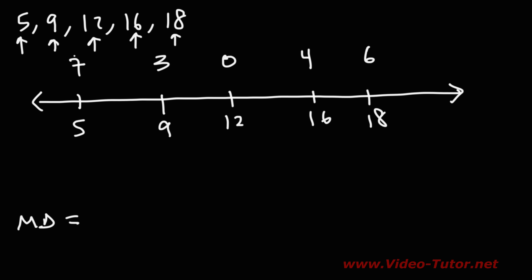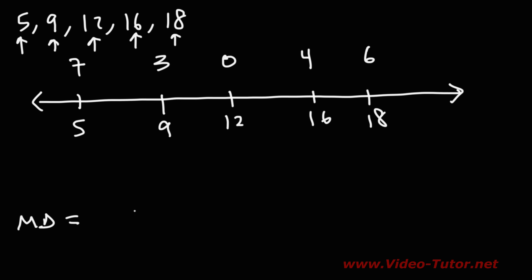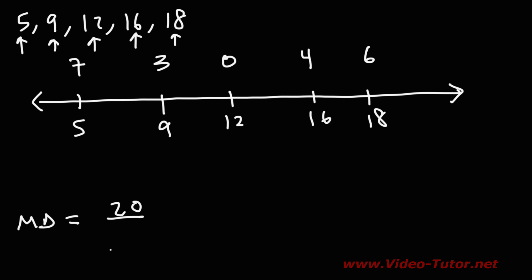We've taken the average of these 5 deviations to get the mean absolute deviation. We summed up 7 plus 3, which is 10, plus 4 plus 6, which is 10, giving a sum of 20 divided by the 5 deviations, so we get a mean absolute deviation — an average absolute deviation — of 4. On average, each number is about 4 units away from the mean.